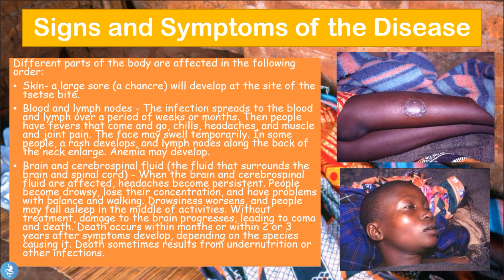When the brain and cerebrospinal fluid (CSF) are affected, headaches become persistent. People become drowsy, lose concentration, and have problems with balance and walking — which is why the disease is called African sleeping sickness. Drowsiness worsens and people may fall asleep mid-activity. Without treatment, brain damage may progress leading to coma and death, which can occur within months to two to three years after symptoms develop, sometimes due to undernutrition or secondary infections.